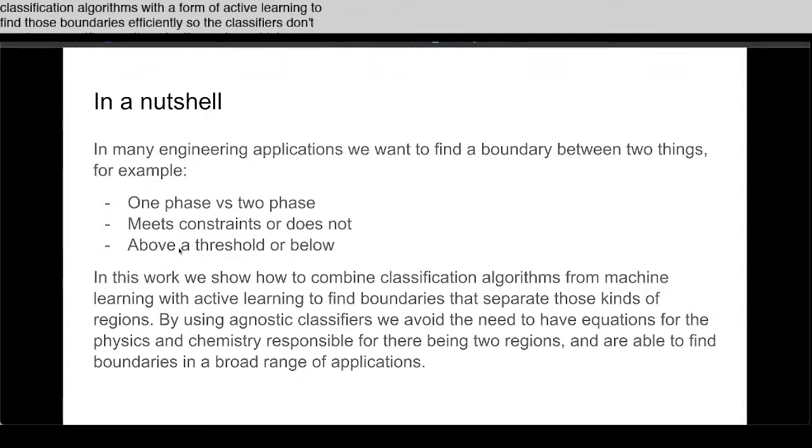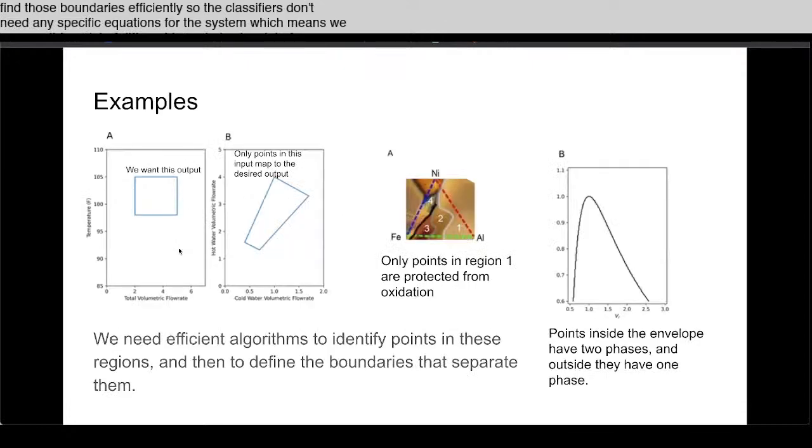Here are the three examples we look at. The one on the left we call the shower problem. You can adjust the temperature of your water, or you can adjust the amount of cold water and the amount of hot water and the volumes.